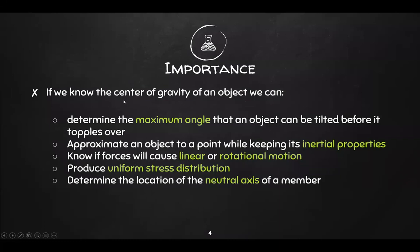Why are we discussing centroid and center of gravity? First, if you know the center of gravity of an object, you can determine the maximum angle an object can be tilted before it topples over — beneficial in creating interesting shapes for architecture. Second, it helps approximate an object to a point while keeping its inertial properties, which greatly simplifies mechanics problems involving oddly shaped objects or complicated systems. Inertial properties are just the characteristics that make something resistant to change or motion.